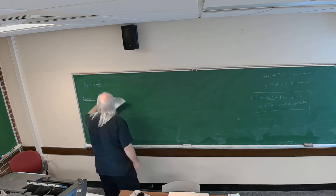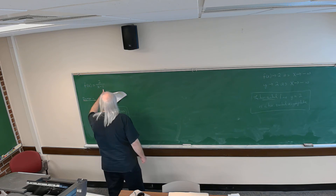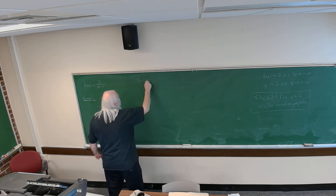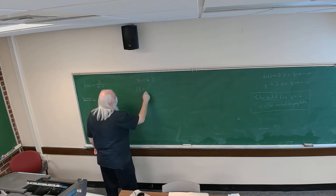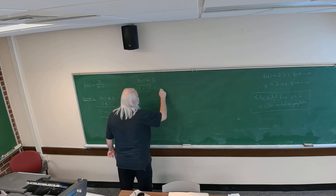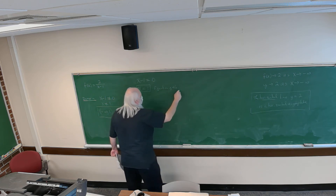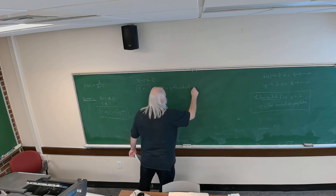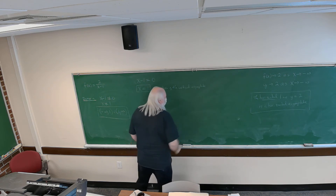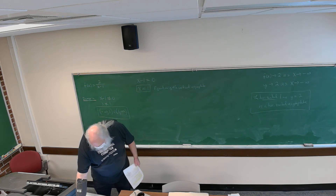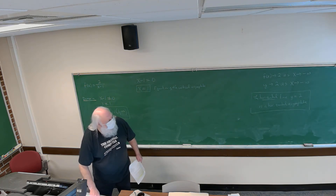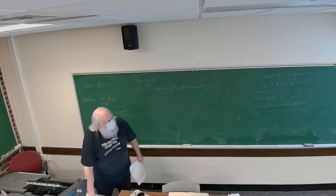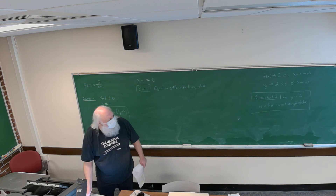For the vertical asymptote: there are no common factors in the numerator and denominator, so we set the denominator equal to zero and solve for x. We get x equals 1, which is the equation of the vertical asymptote. That's also what the top of the page describes — once there are no common factors, set the denominator equal to zero and solve for x to get the vertical asymptotes.